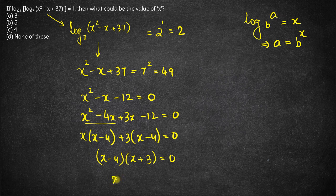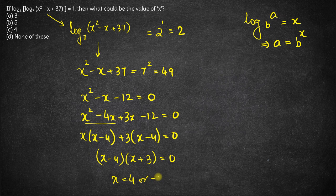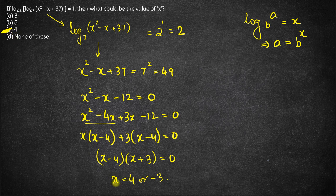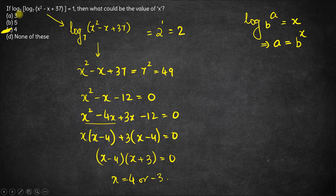From here we have either x equals 4 or x equals minus 3. The correct answer here will be x is 4 or minus 3, option C. Only x equals 4 is there in the options, so option C is the right answer. Thank you.